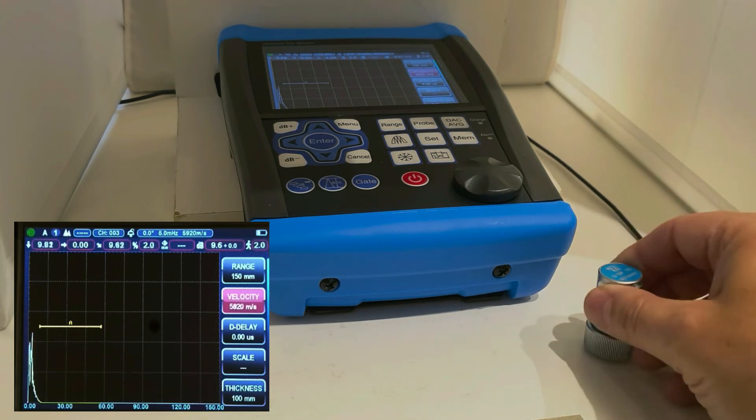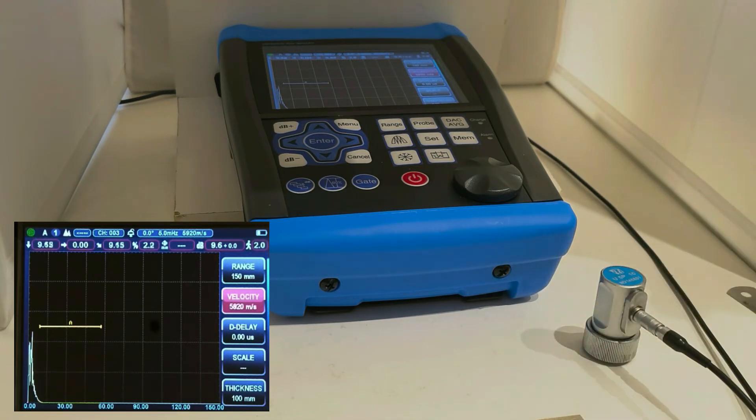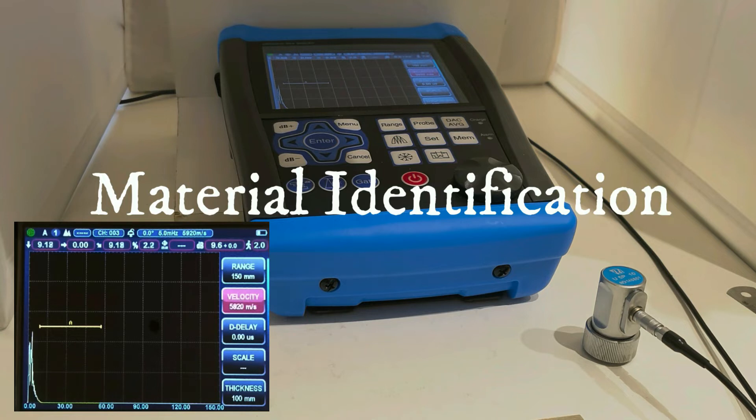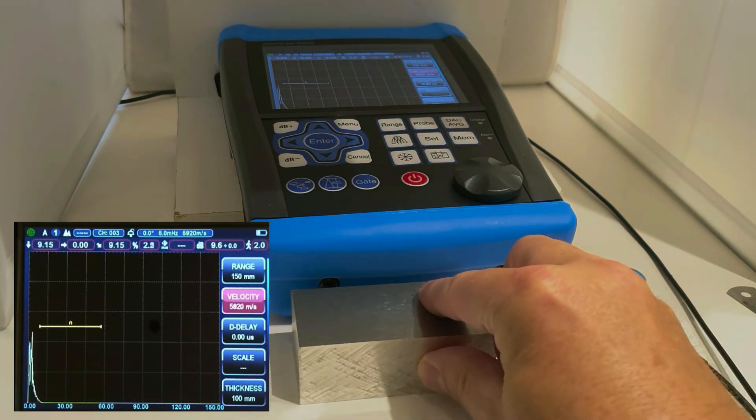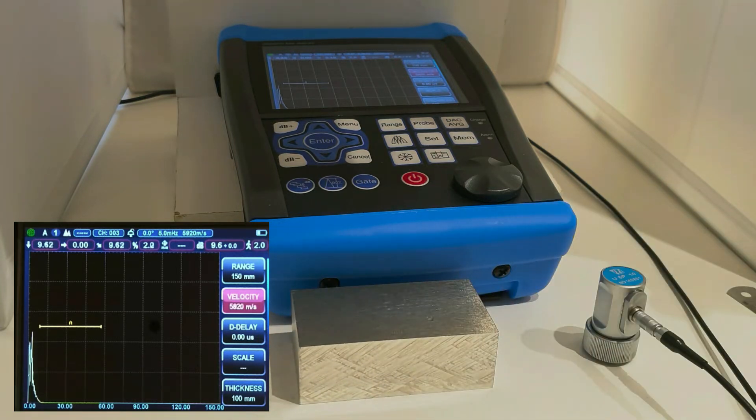One of the simple uses of autosonic testing is to identify a material. So let's say we have a component, this one, we have a component of unknown material, and we want to find out what material it is.